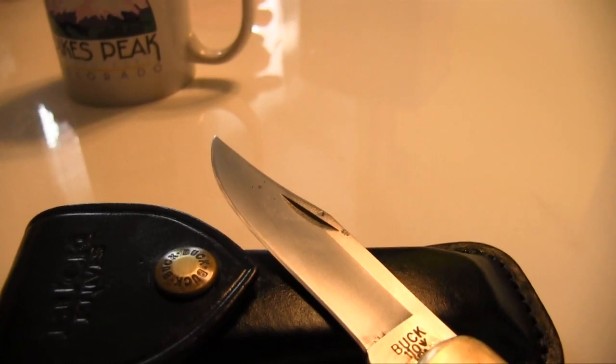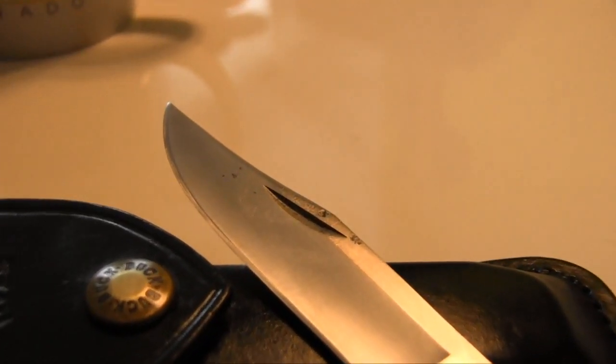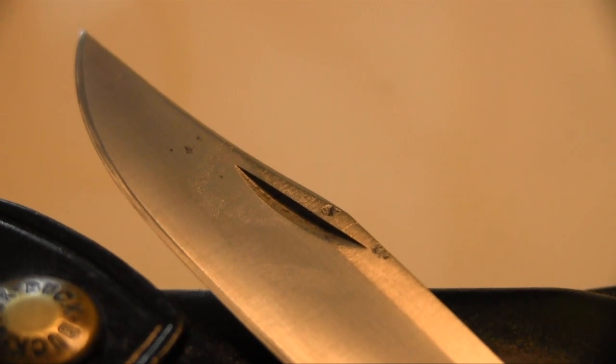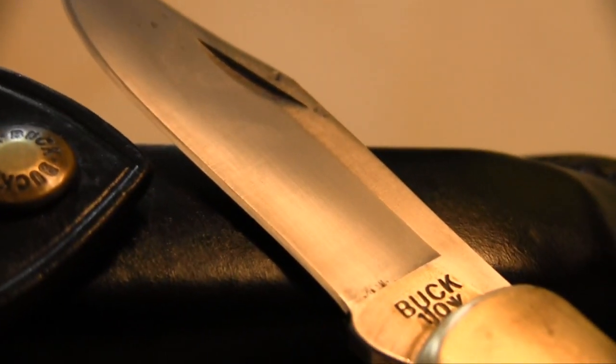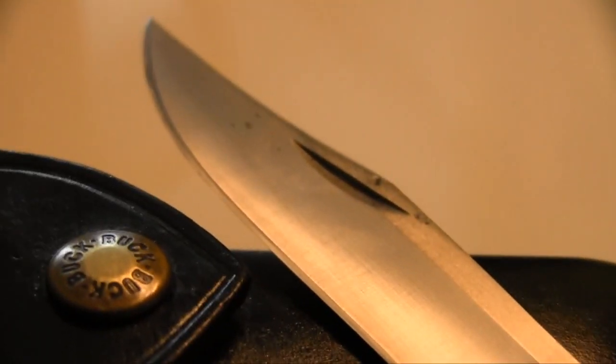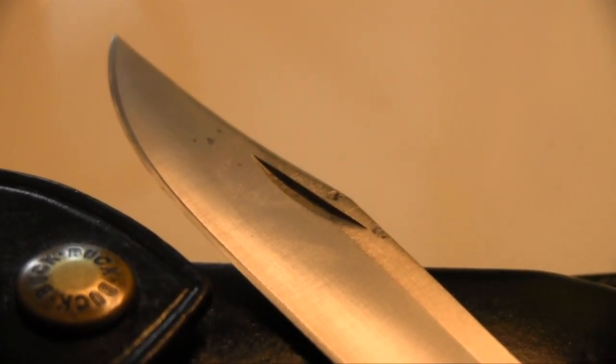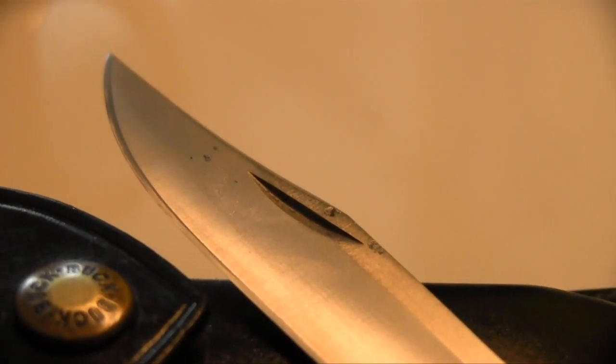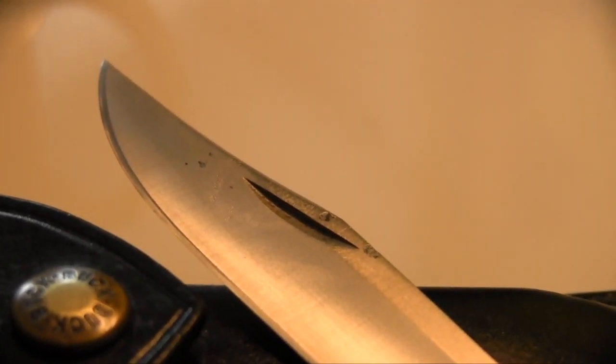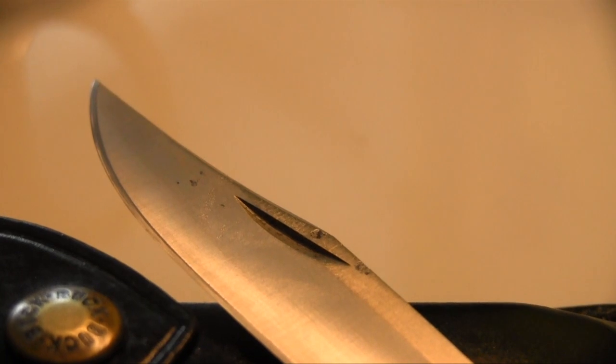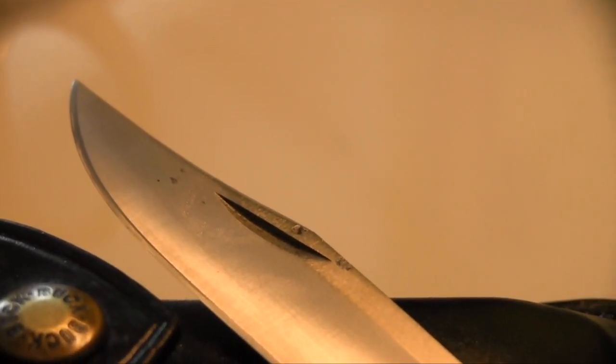You may can see the staining points on the blade. So even that this is stainless steel, it still will get some stains here and there. But that's no big issue for me, because I do my best to clean the knife, to sharpen the knife, and to keep it clean, to keep it dry, and to keep it oiled as good as possible.